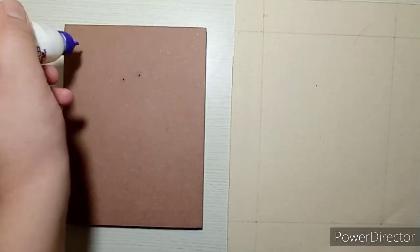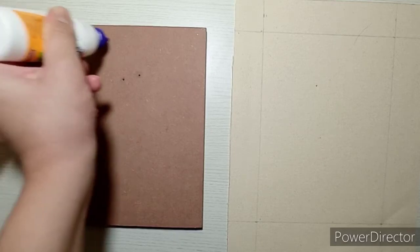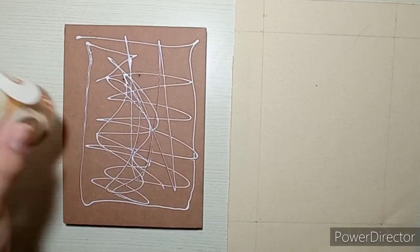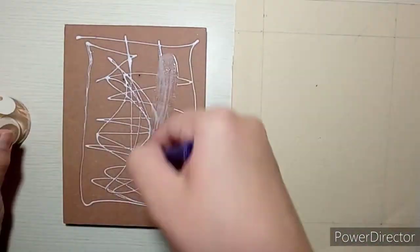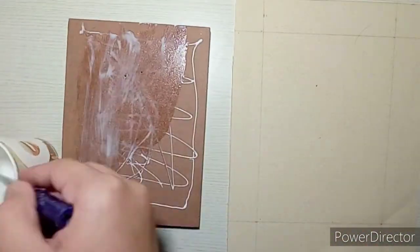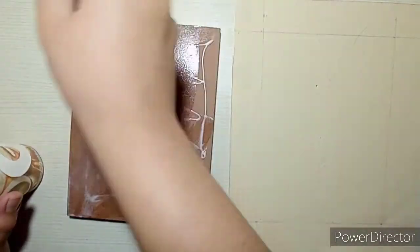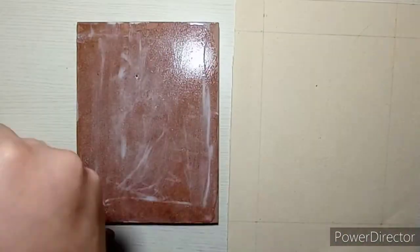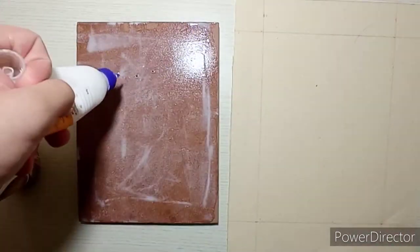Now I'm going to apply the white glue evenly on the strong board or the wooden plank. Make sure that you apply it evenly. Now I'm going to take the solution and apply it evenly on the strong board, making horizontal strokes and vertical strokes.